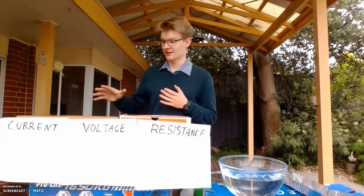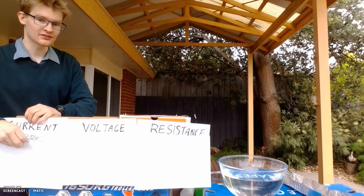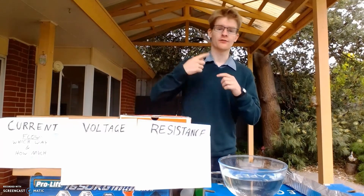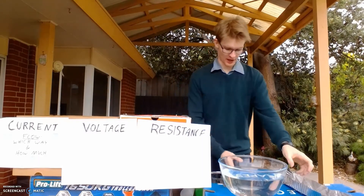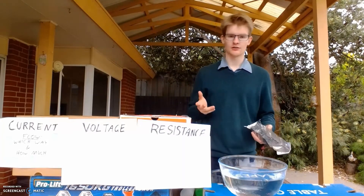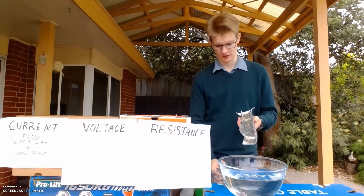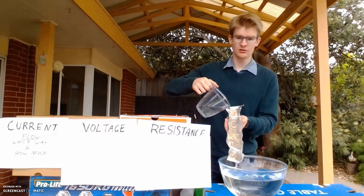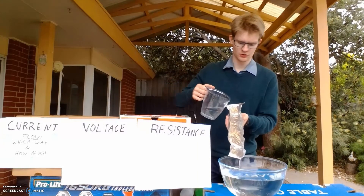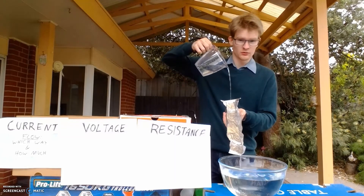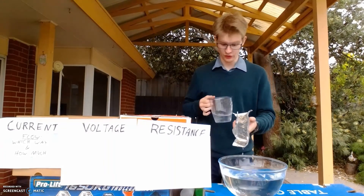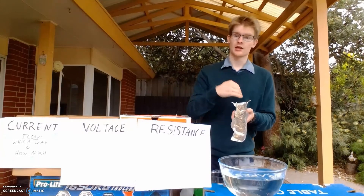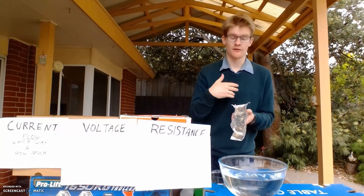The first thing to understand is current. What current is, is it's the flow of electricity — how much electricity, or how many electrons, are flowing through a circuit. When we talk about water, it's the exact same thing. Current is which way the water is flowing and how much water is flowing. So let's say in this path, in attempt one, I just pour a little tiny trickle down. That's not a lot of current because there's not a lot of water flowing down. The same would be for electricity — if that was electrons going down, it wouldn't be a lot of electrons, and so it wouldn't be a high current.